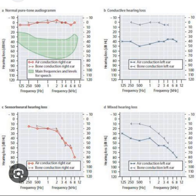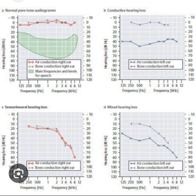Beyond pure tone audiometry, a comprehensive audiological assessment includes tympanometry, otoscopy, speech audiometry, otoacoustic emissions, and validity checks such as the Stenger test — useful for assessing middle ear function, outer and middle ear integrity, speech interpretation ability, cochlear hair cell function, and exaggeration of hearing deficits. Further testing such as auditory brainstem responses and electrocochleography is typically performed only for specific indications, such as a failed newborn hearing screen or to diagnose Meniere's disease.